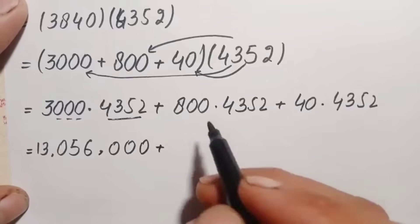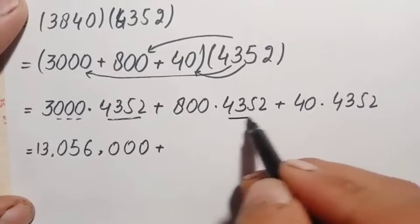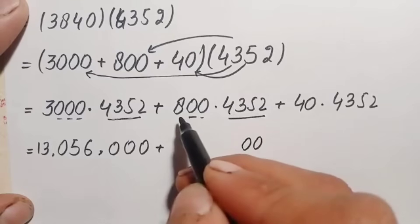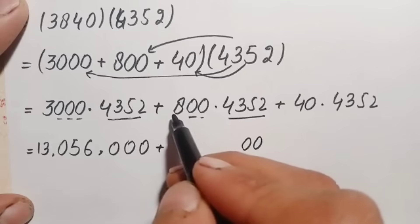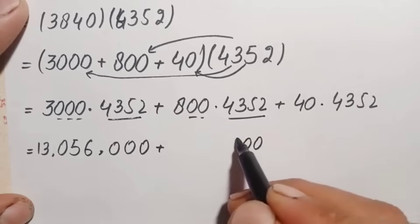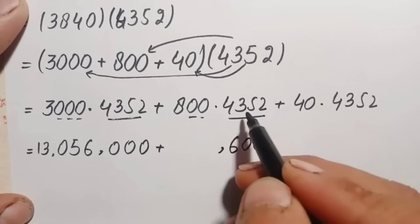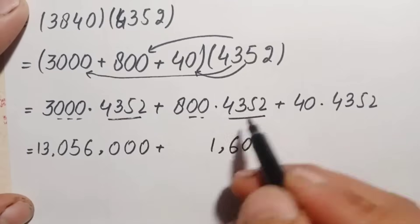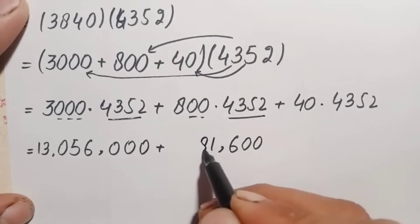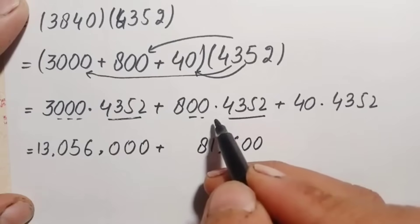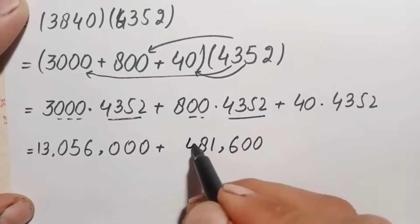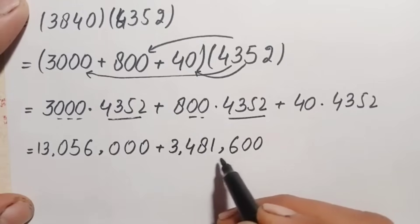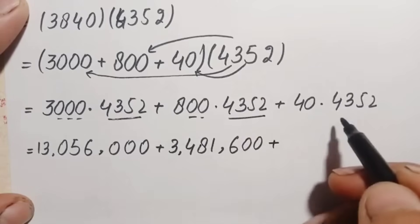Multiplying 800 times 4352: the two zeros contribute zeros, and 8 times 4352 gives 8 times 2 is 16 (write 6 carry 1), 8 times 5 is 40 plus 1 is 41 (write 1 carry 4), 8 times 3 is 24 plus 4 is 28 (write 8 carry 2), 8 times 4 is 32 plus 2 is 34. So 800 times 4352 is 3,481,600.